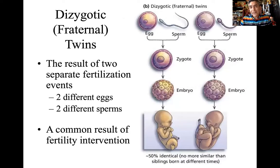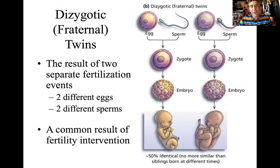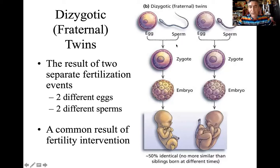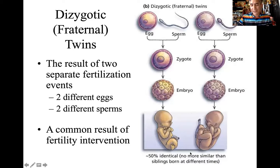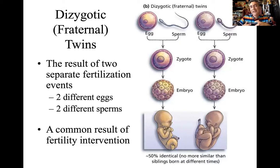The second category of twins is what we call dizygotic twins, also known as fraternal twins. Sometimes with each cycle, you don't ovulate just one egg — you might ovulate two eggs. So two eggs are viable for fertilization, and they get fertilized by their own separate sperm. Each one continues down its own developmental path. These siblings are only 50% identical — no more similar than siblings born at different times, the same as you and your older brother or younger sister. They're the same genetic relatedness; they just happen to have shared the same pregnancy.